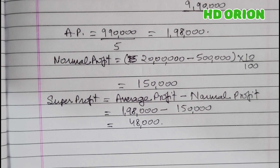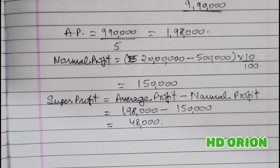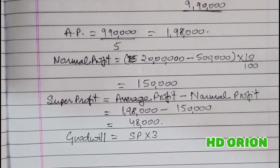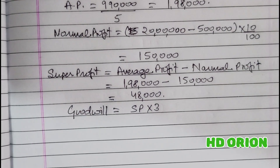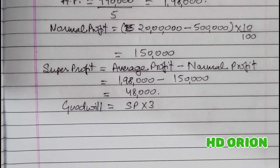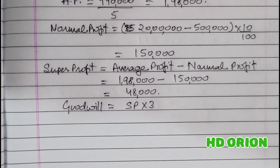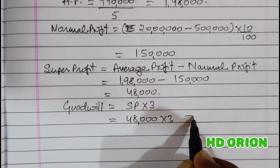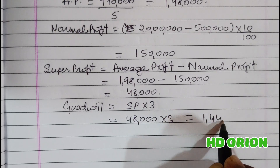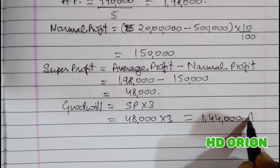Super profit is ₹1,98,000 minus ₹1,50,000 equals ₹48,000. The question says three years' purchase of super profit, so goodwill equals ₹48,000 multiplied by 3, and our answer is ₹1,44,000. The firm expects the same super profit to be generated in the next three years, so the goodwill of the firm is ₹1,44,000.